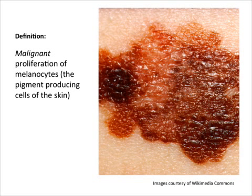Melanoma is defined as malignant and uncontrolled proliferation of melanocytes, which are the pigment-producing cells of the skin. Melanin, which appears as pigmentation on the skin, is a protein produced by the melanocytes in defense of the skin against UV radiation. It is worthwhile to mention that the number of melanocytes does not differ between different ethnic races, but it is the amount of melanin produced that differs. Therefore, dark-skinned individuals' skin is much less likely to be damaged by UV radiation compared to white or pale-skinned individuals.